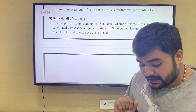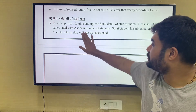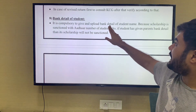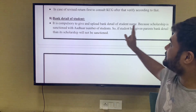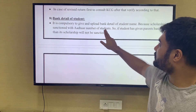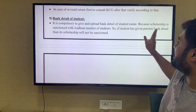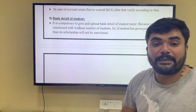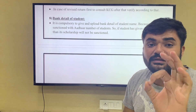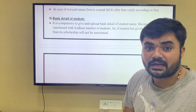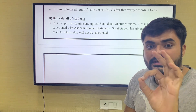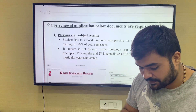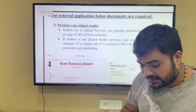It is compulsory to give and upload bank details of the student's name, because scholarship is sanctioned to the student's account number. If the student has given parents' bank details, it will not be sanctioned. Bank details must be the student's own. If your account has not been opened, you will need to open one.